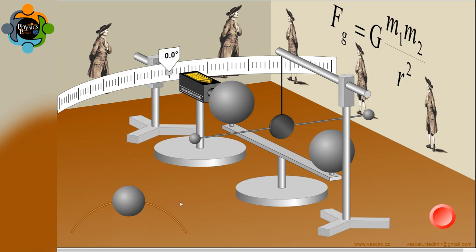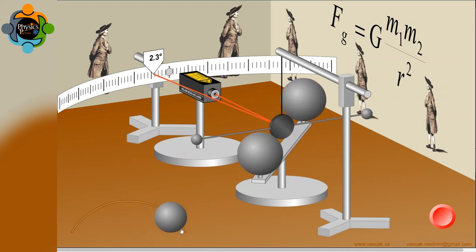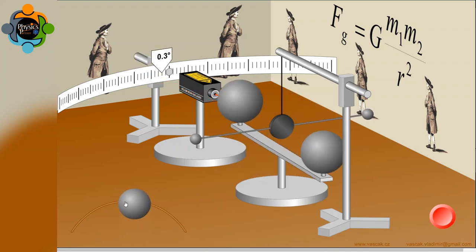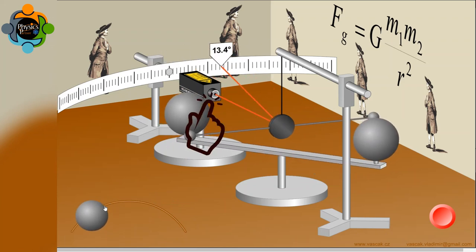A delicate apparatus consisting of two small lead spheres suspended from an incredibly thin wire. These spheres were positioned near two larger lead spheres, creating a gravitational attraction between them. A light beam reflected off the suspended spheres allowed Cavendish to observe their infinitesimal movement.